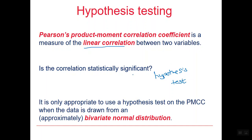It is only appropriate to use a hypothesis test on the PMCC when the data is drawn from a bivariate normal distribution. What this means is that when you look at the scatter diagram it is roughly elliptical — the data is concentrated roughly in the middle of an elliptical grouping on the scatter diagram.